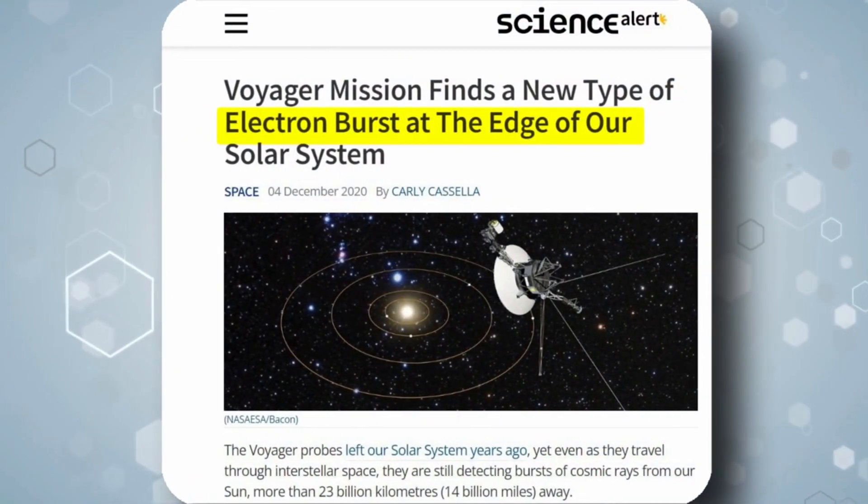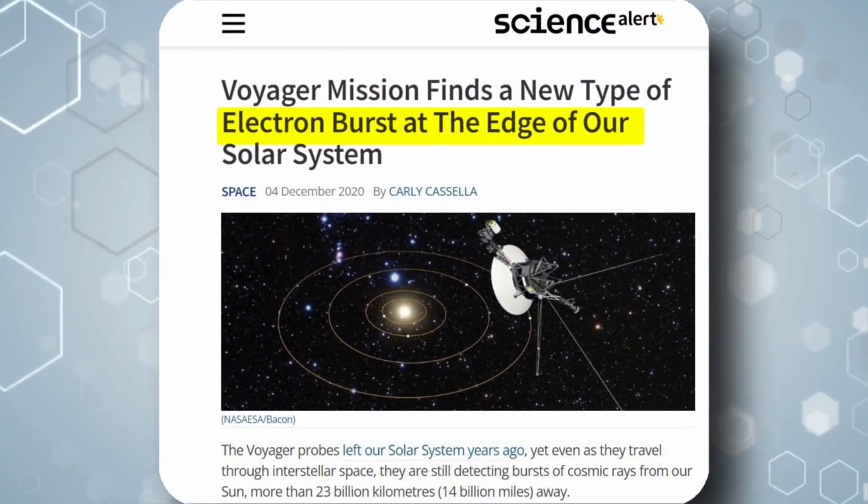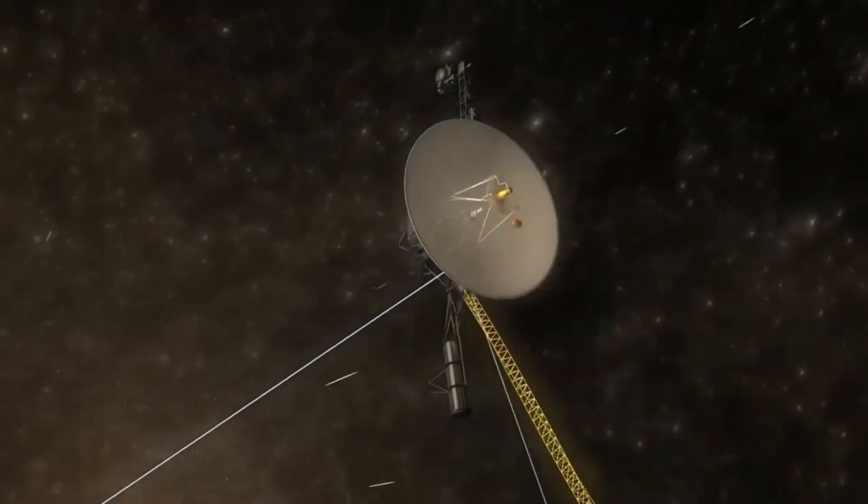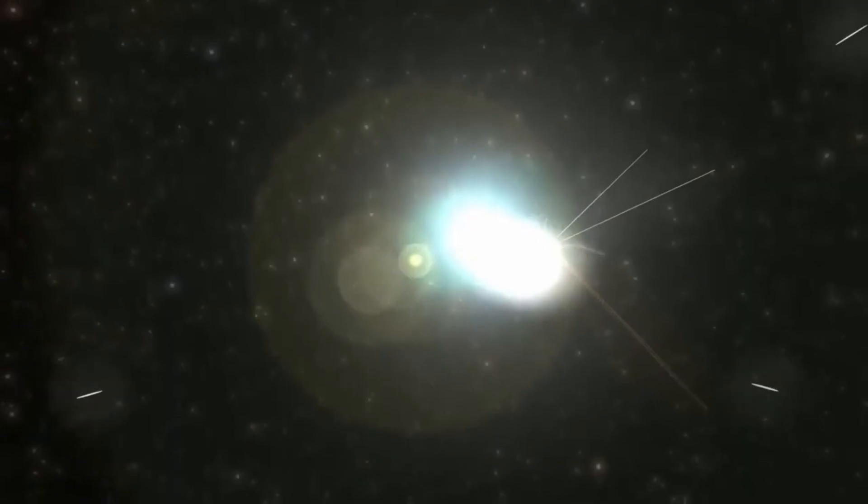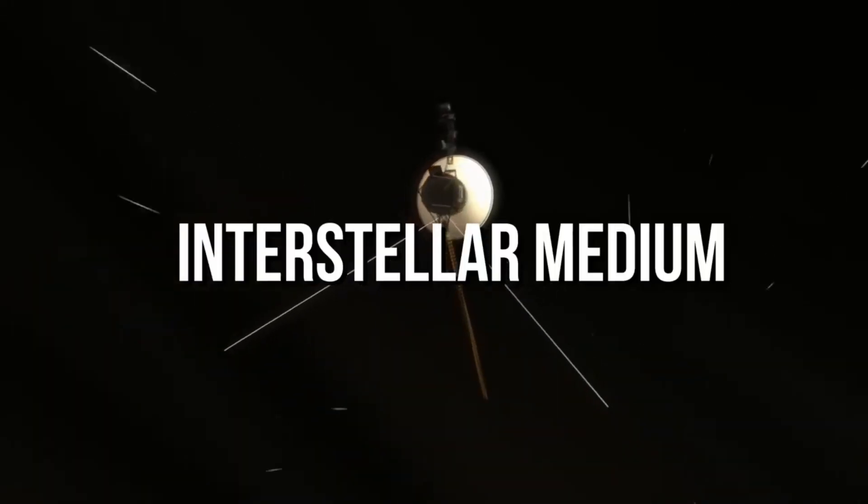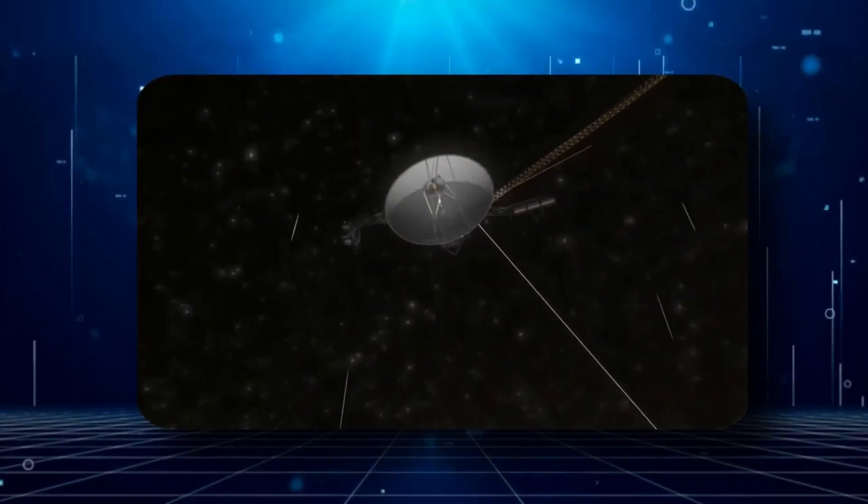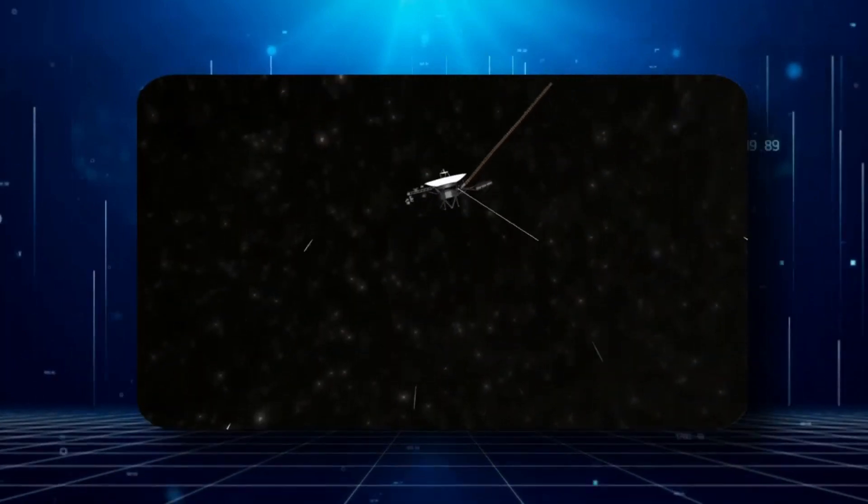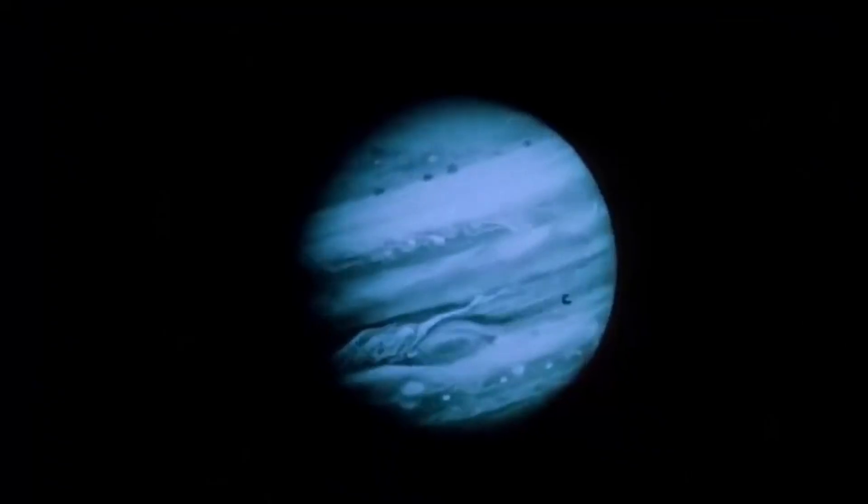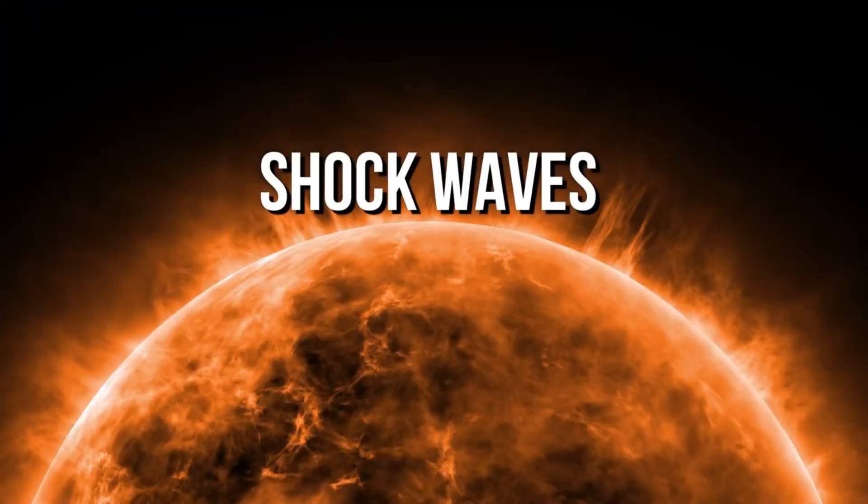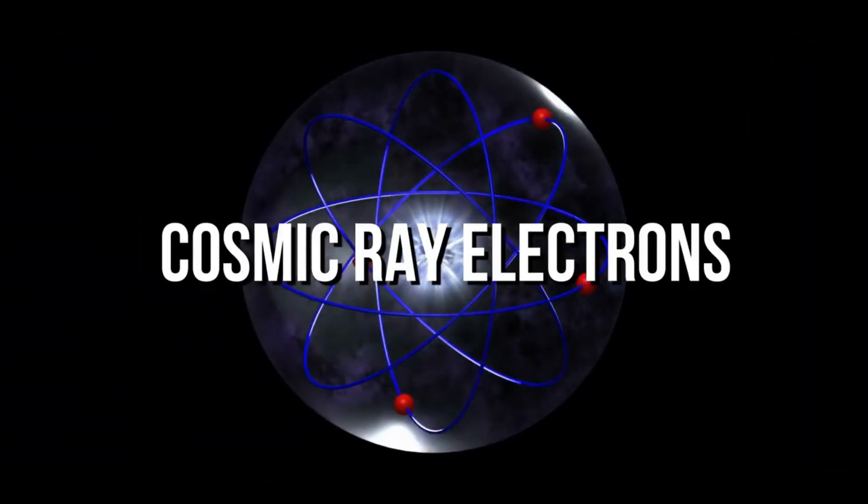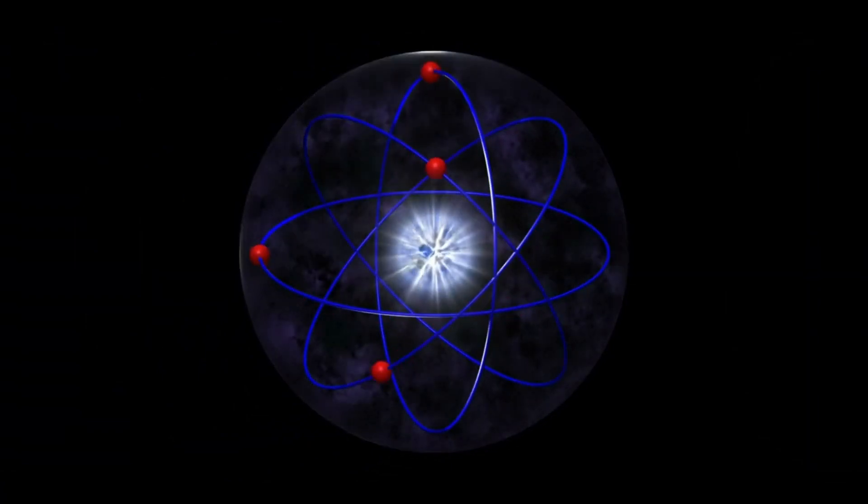A totally new type of electron burst is described in a report recently published in the Astronomical Journal. This finding was made possible by the exploratory efforts of the Voyager probes. These explosions are occurring in the interstellar medium, a region of space characterized by an excruciatingly low density of matter. They are being reflected and amplified to high speeds by advancing shockwaves produced by the Sun.